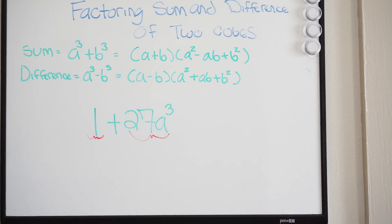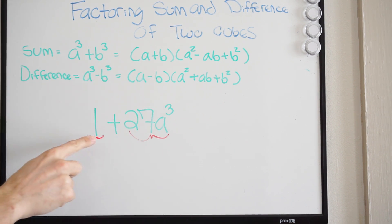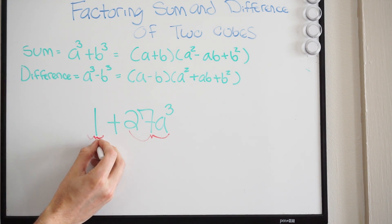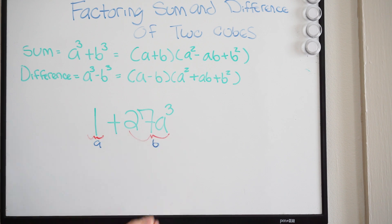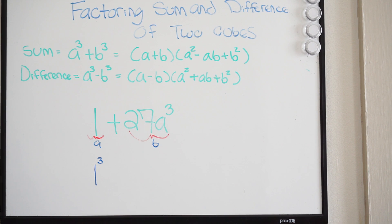We've already come to the conclusion that we can't pull out a common term. So we need to try to rewrite this so that they both have an exponent of three. Remember, this whole thing is my a, and this whole thing is my b. So we need them to both have an exponent of three. If I look at 1, I can rewrite 1 as 1 cubed — mathematically I can do this, because 1 cubed is just 1.